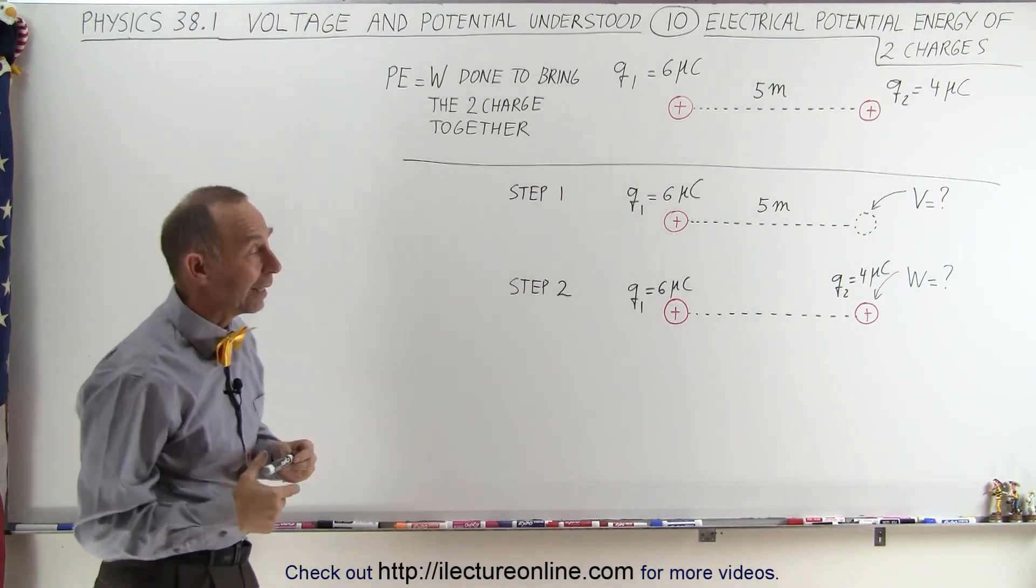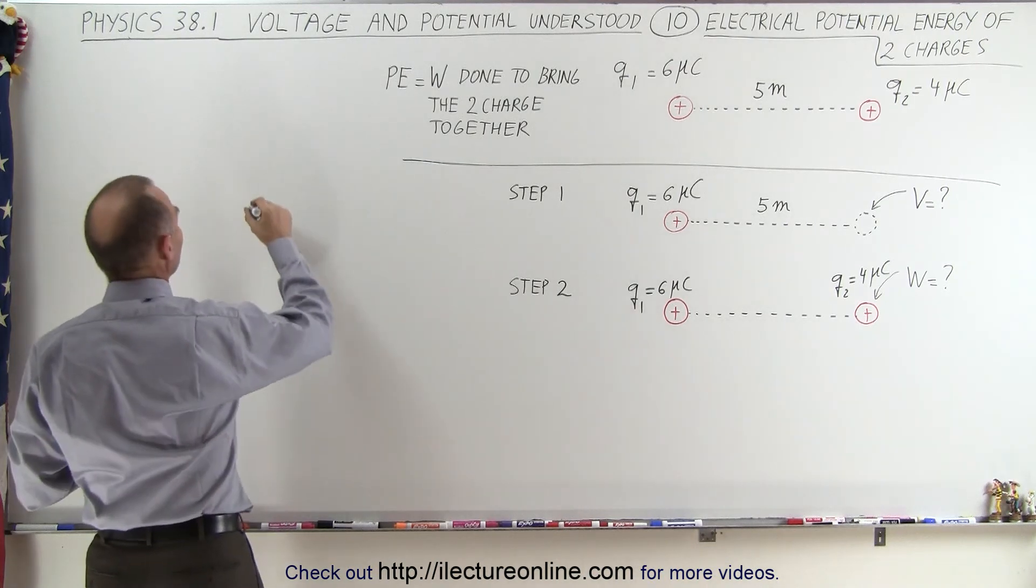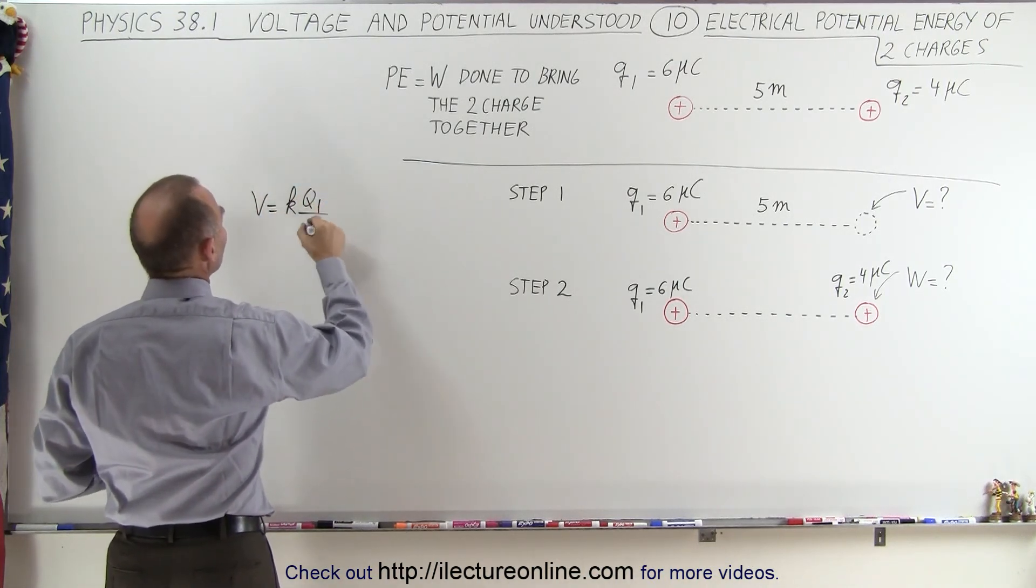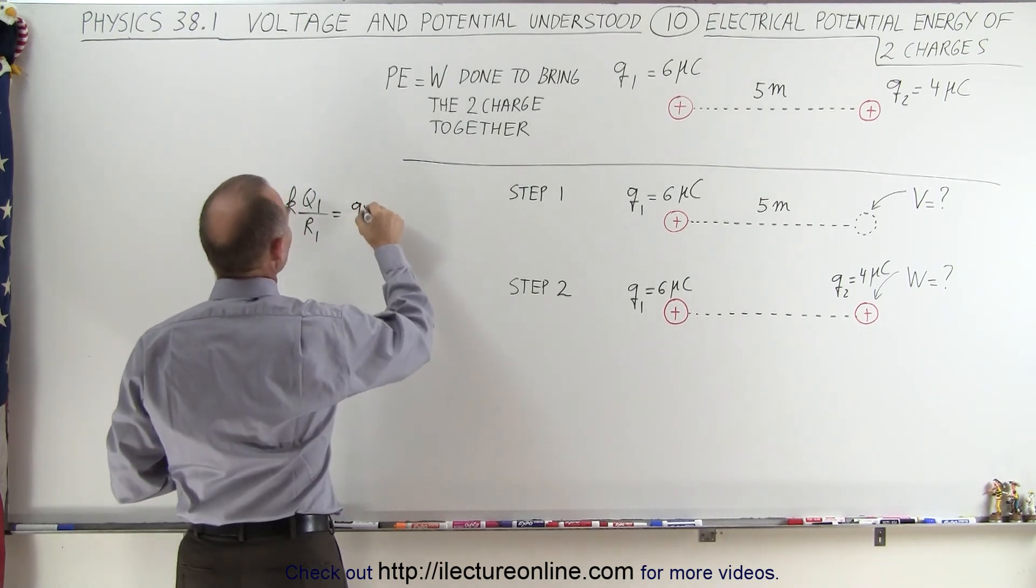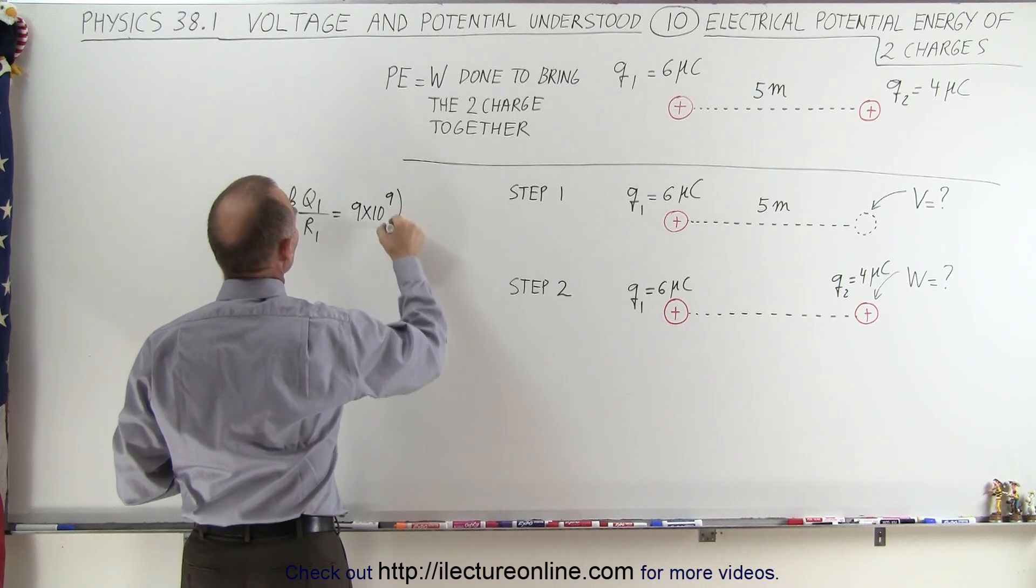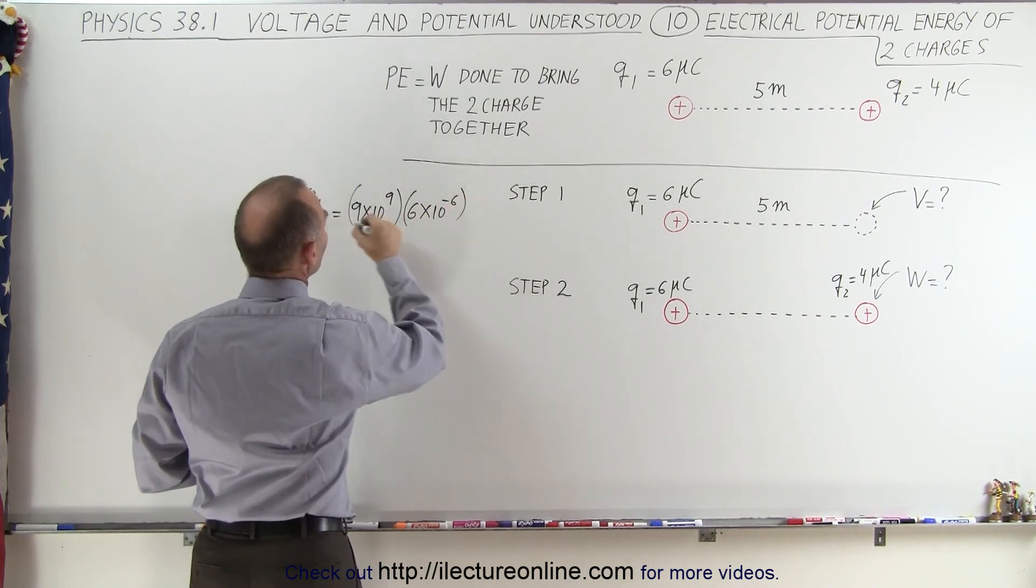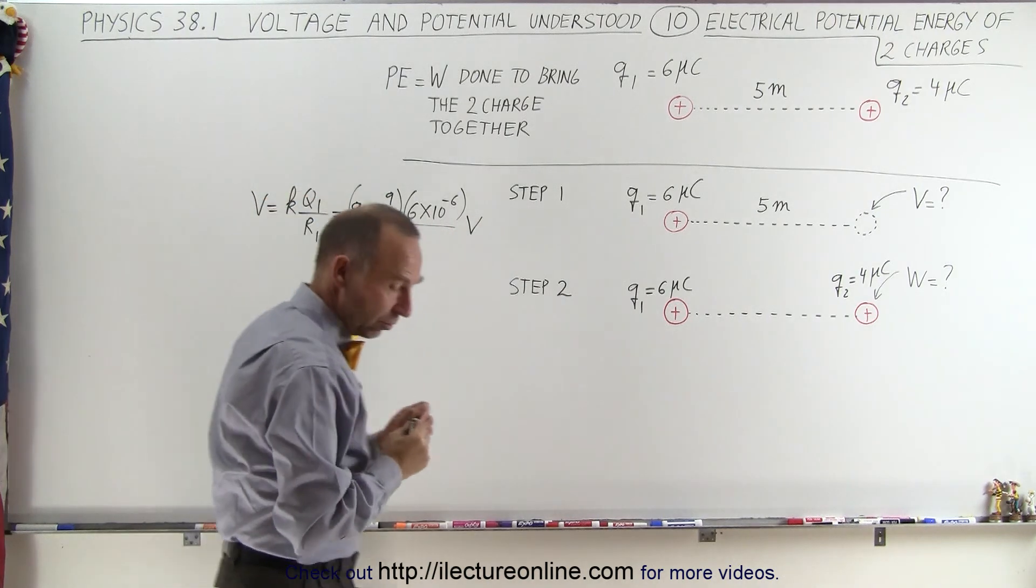Now we've learned how to do that. That's the potential due to a single point charge. So we can say that V is equal to K times Q1 divided by R1. So in this case, that's going to be equal to 9 times 10 to the 9th times 6 microcoulombs, 6 times 10 to the minus 6 divided by 5, and that's going to be in terms of volts.